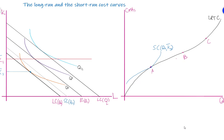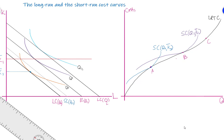Now suppose the firm wants to produce output level Q1 in the short run. Because capital is fixed at K1-bar, we observe that the point of tangency holds for both the short-run and the long-run curve. Therefore we have point B in the second picture, and we draw a short-run cost curve such that the long-run cost curve touches the short-run total cost curve at point B, corresponding to output level Q1 when capital is fixed at K1-bar.